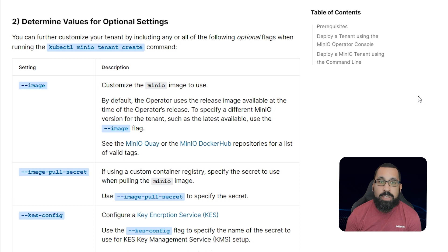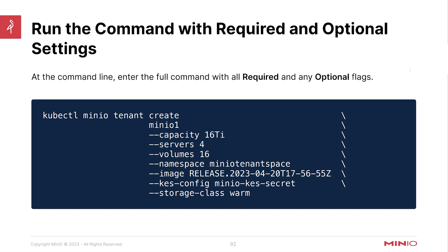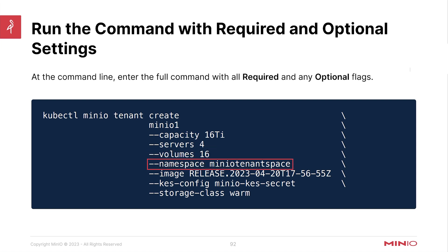Once you have all of these things defined, your command will look something like this: kubectl minio tenant create. In this case we're creating a tenant called minio1, giving it a capacity of 16Ti, four servers, 16 volumes. The namespace is minio-tenant-space, we're defining a specific image release from 4-20-2023, the KES configuration is the minio-kes-secret, and the storage class is warm. This is just an example — not the actual configuration for the lab — but it shows how your command might end up looking.